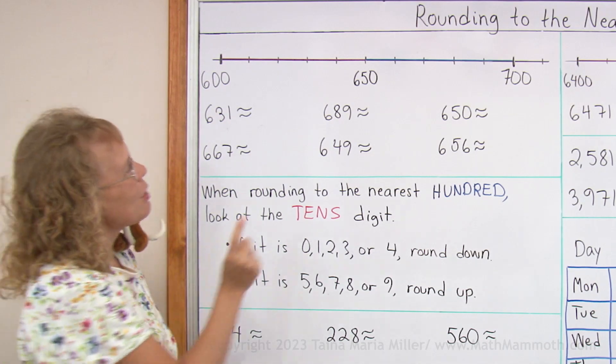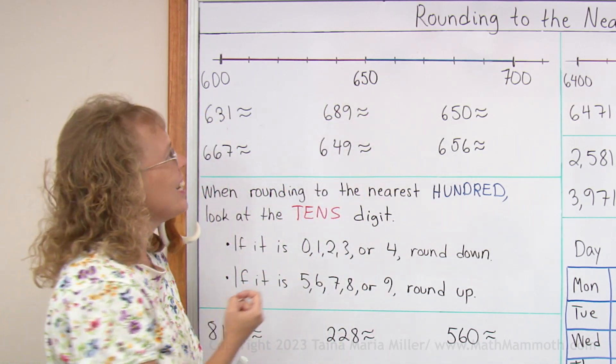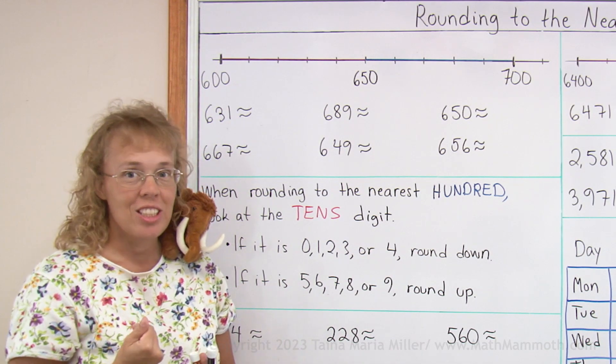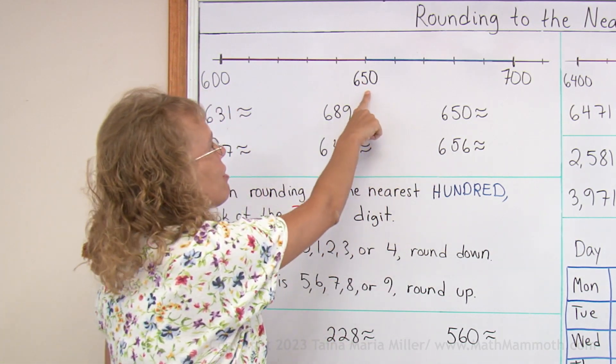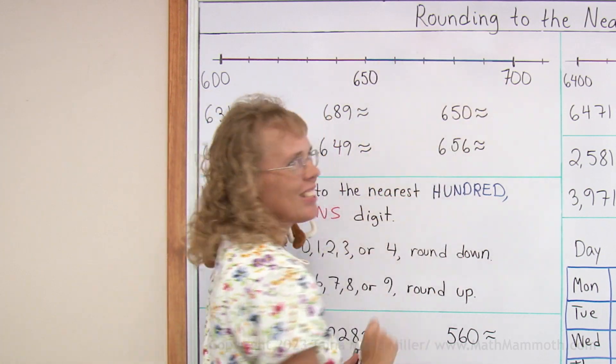And then we have this middle guy here, 650, and the convention is mathematicians have decided that the middle number is always rounded up to 700 in this case.